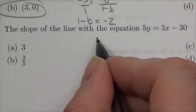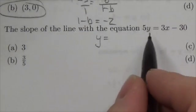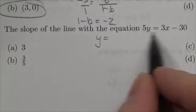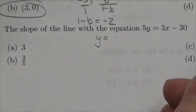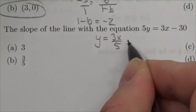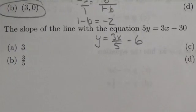So I will divide both sides here by 5. Now, when I say I divide both sides by 5, that means every term here gets divided by 5. So this becomes 3x over 5 minus 30 over 5, which is just 6.